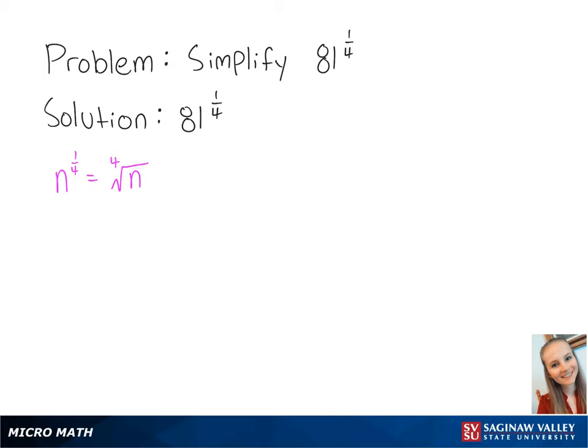Let's simplify 81 to the 1/4th power. Any number n raised to the 1/4th power is equal to the 4th root of that number. So 81 to the 1/4th power is equal to the 4th root of 81.